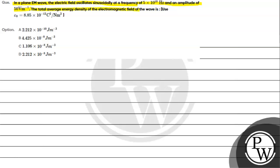The total average energy density of the electromagnetic field of the wave is - we can use the value of epsilon naught, that is permittivity of free space, as 8.85 times 10 raised to minus 12 coulomb square per newton meter square.